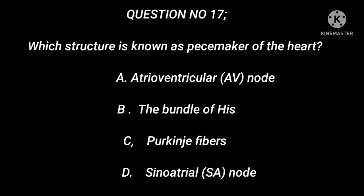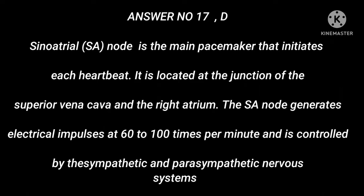Question number 17: Which structure is known as the pacemaker of the heart? A. Atrioventricular (AV) node. B. Bundle of His. C. Purkinje fibers. D. Sinoatrial (SA) node. Answer number 17: D. The sinoatrial (SA) node is the main pacemaker that initiates each heartbeat. It is located at the junction of the superior vena cava and the right atrium. The SA node generates electrical impulses at 60 to 100 times per minute and is controlled by the sympathetic and parasympathetic nervous systems.